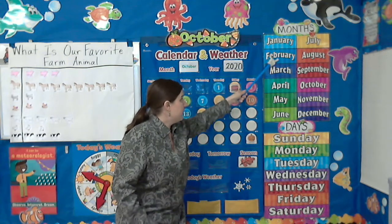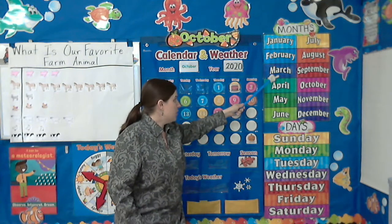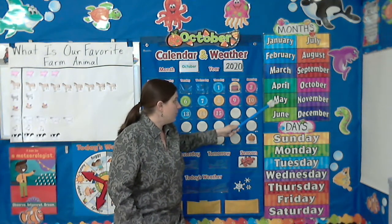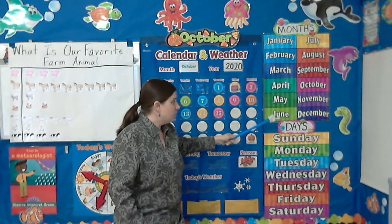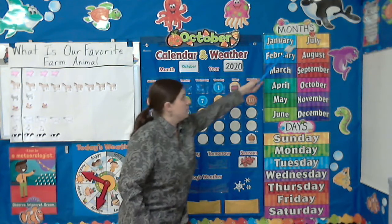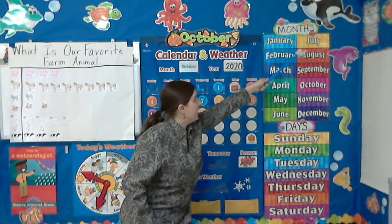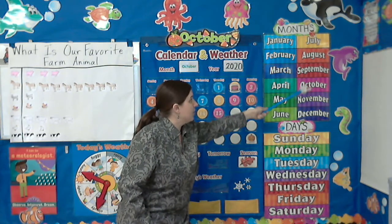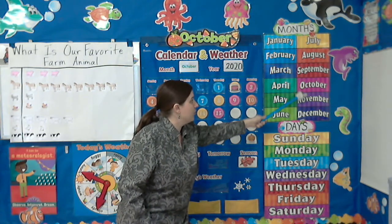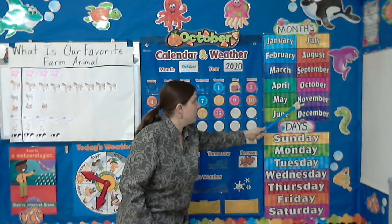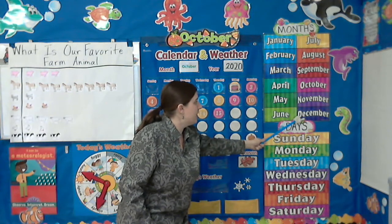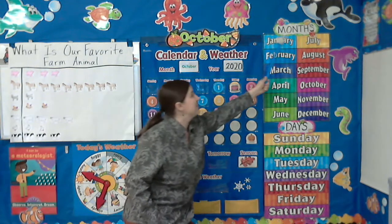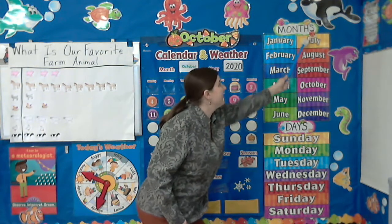January, February, March and April, May, June, July, and August, September, October, November, December — twelve months in a year.